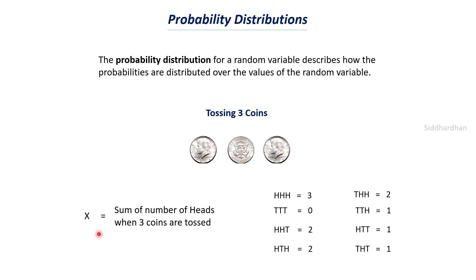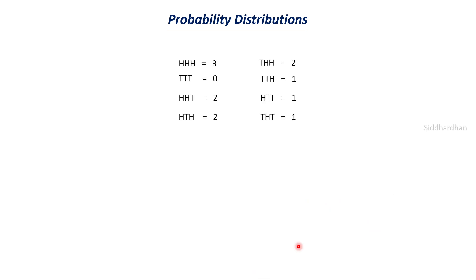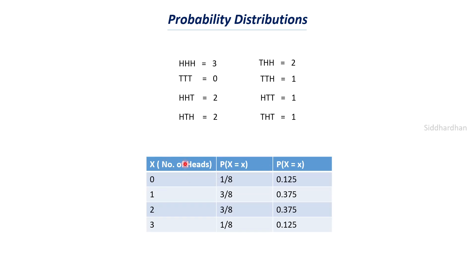We are carrying out this experiment and considering the random variable as the sum of number of heads. Now we need to find how the values are distributed overall — that is, what is the probability of each of these values. This is called a probability distribution. We have all the possibilities and we can put this in a table. Generally, probability distribution will be represented in a table.